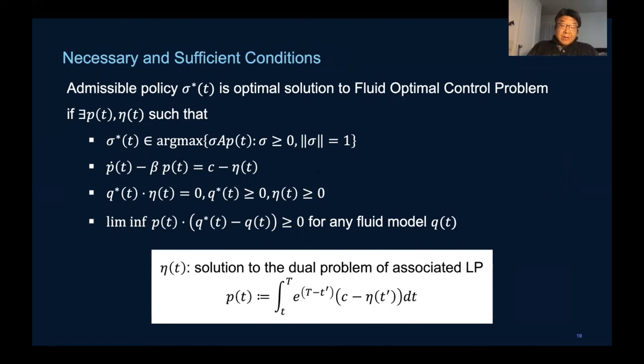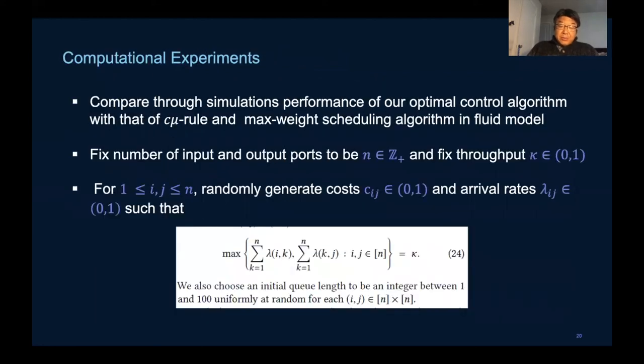We fix the throughput to be kappa and randomly generate arrival rate costs and constraints, and also randomly generate initial queue lengths uniformly between one and a hundred. In this representative example, we compare the performance over time of the optimal policy against max weight.